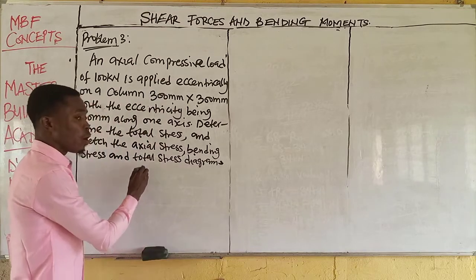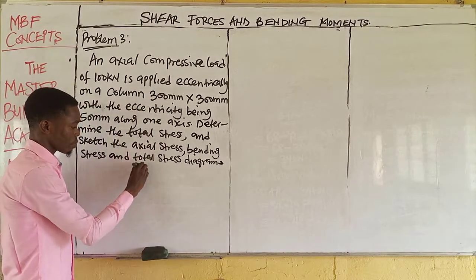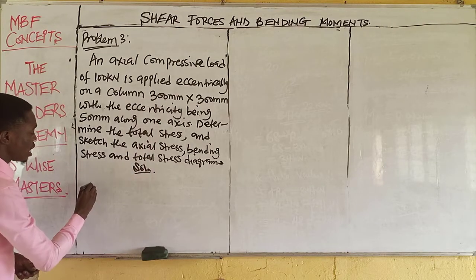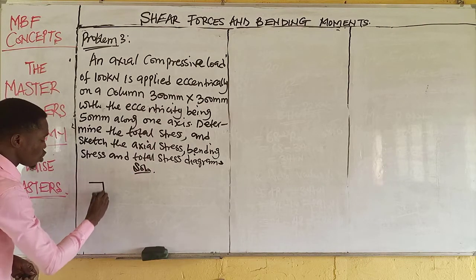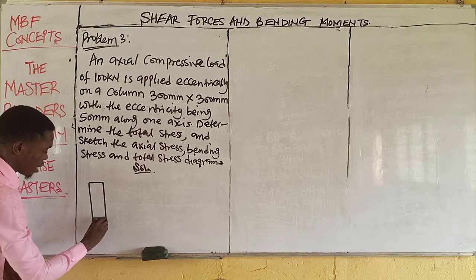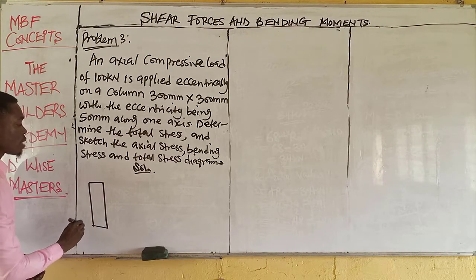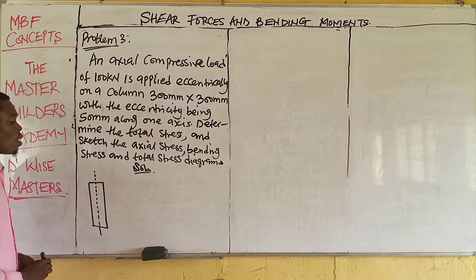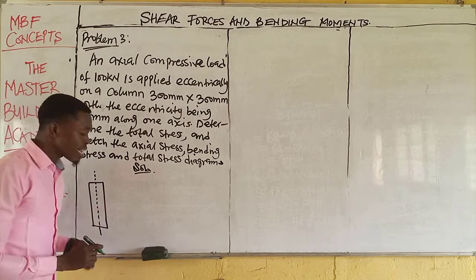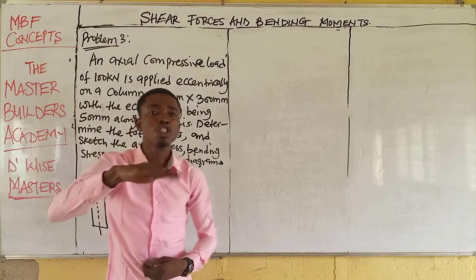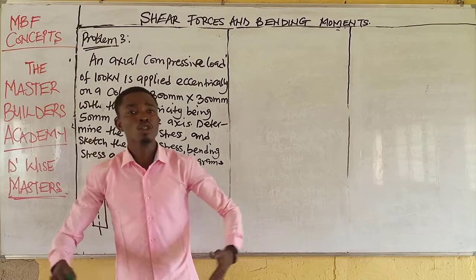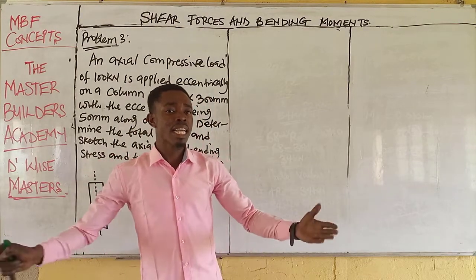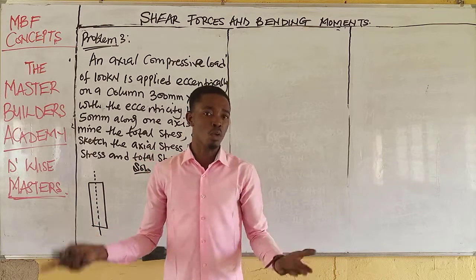This is the question. So we put down a solution. From this question, we will draw a column. Let's assume this is a column. This is the neutral axis of the column. When a system is loaded at the neutral axis, that is when we have concentric loading. In that case, eccentricity is zero.